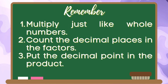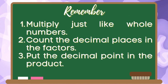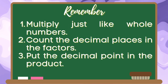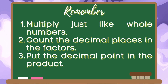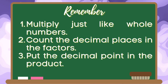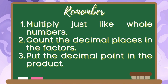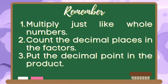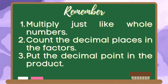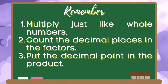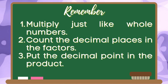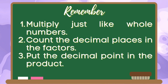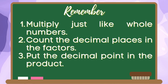Remember, to multiply decimal numbers, here are the steps to follow. First, multiply just like whole numbers. Second, count the decimal places in the factors. And third, put the decimal point in the product.